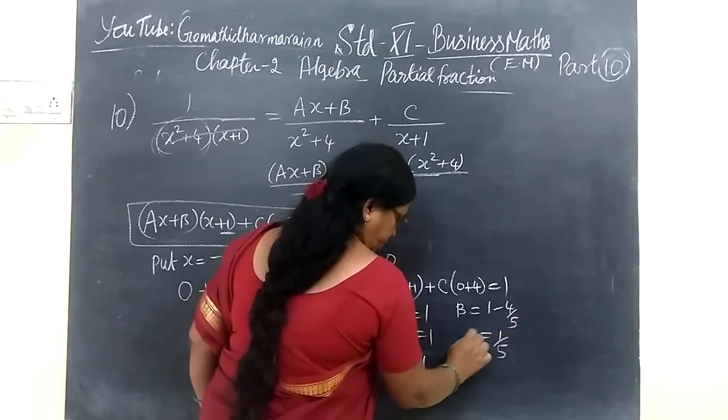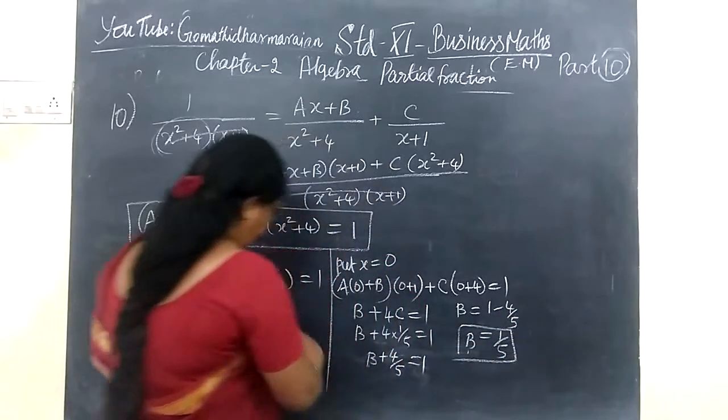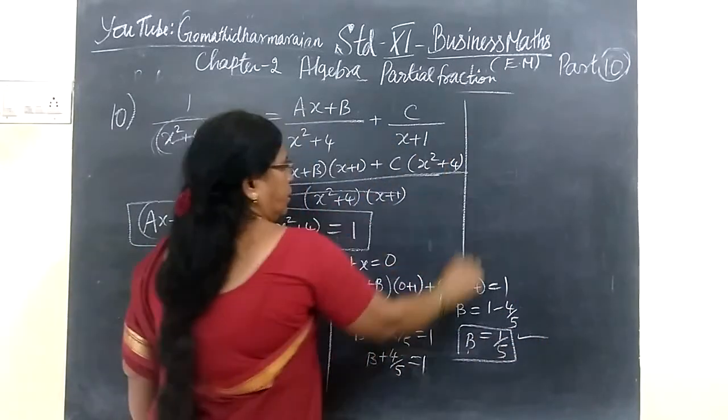So which implies B equals to 1 minus 4 by 5. This is equal to 1 by 5. So two values: C value, B value consist of this.